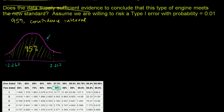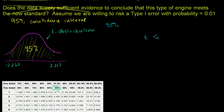That is our t-distribution. So if you randomly pick a t value from this t-distribution, it has a 95% chance of being within this far from the mean. If I take a random t statistic, there's a 95% chance that it is going to be less than 2.262 and greater than negative 2.262.